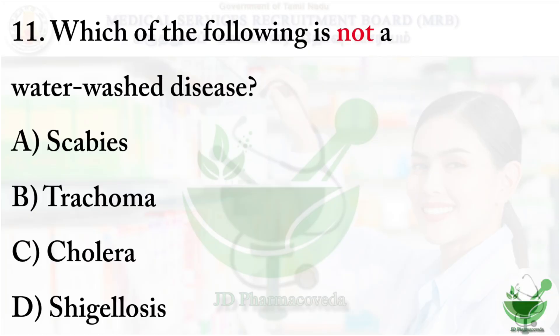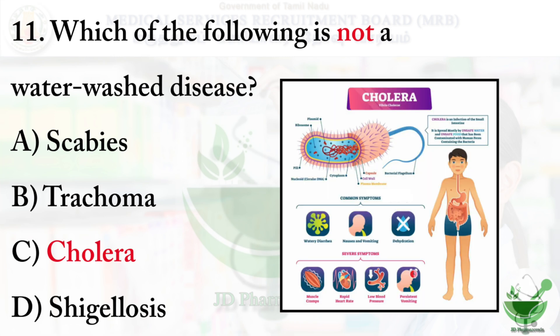Question number 11: Which of the following is NOT a water-washed disease? Water-washed diseases are caused by poor hygiene where water is not of perfect quality. Options are: A) Scabies, B) Trachoma, C) Cholera, D) Shigellosis. The correct answer is option C — Cholera.